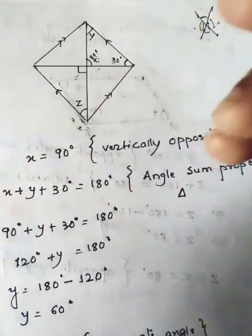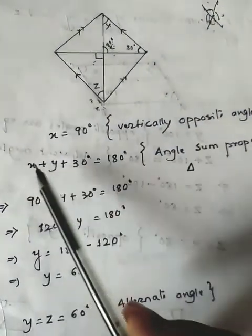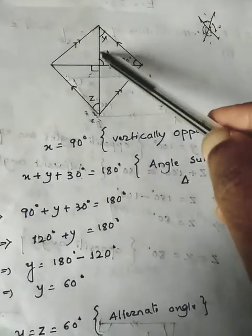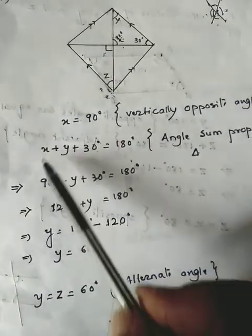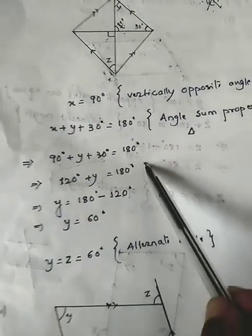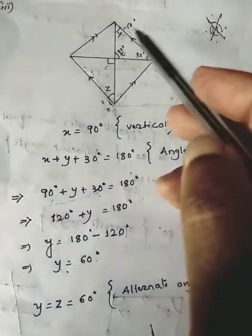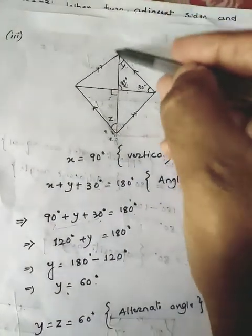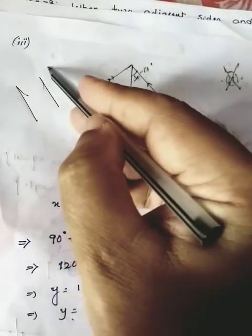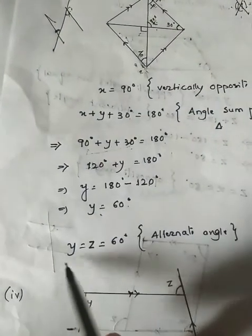Now looking at the triangle formed, two angles are known, so the third can be found: x plus y plus 30 degrees equals 180 degrees — reason: angle sum property of a triangle. Substituting x as 90 degrees: 90 plus y plus 30 equals 180, giving 120 plus y equals 180, so y equals 60 degrees. For z: the two parallel sides with the diagonal as transversal make y and z alternate angles, so z equals y equals 60 degrees — reason: alternate angles.